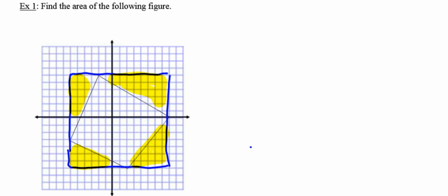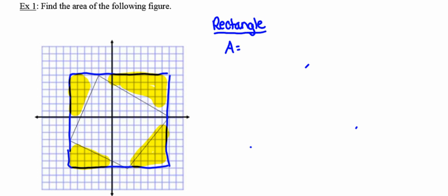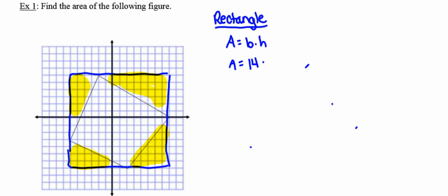I have to be very descriptive about exactly what I'm doing and explain my work clearly. I'm going to start by finding the area of the rectangle. The formula is area equals base times height. I'm going to use the picture to count the number of squares in the base and height, then multiply. I find that the area of that rectangle is 182 square units.